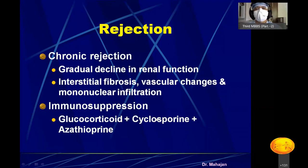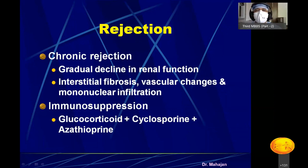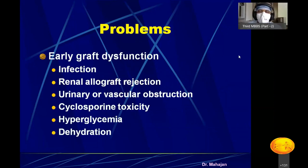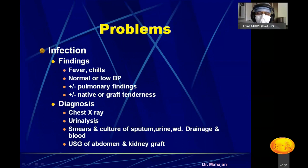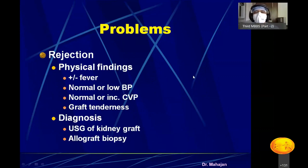Immunosuppression is given to all transplant patients. Without immunosuppressive drugs, the kidney — being a foreign body — will be rejected. You suppress the immunity so the kidney is accepted. Early graft dysfunction can occur due to infection, rejection, urinary or vascular obstruction, cyclosporine toxicity, hyperglycemia, or dehydration. Infection is also a concern post-transplant; chest infection is very common, diagnosed with chest X-ray, and urinary tract infection is diagnosed with urine analysis and treated with appropriate antibiotics.